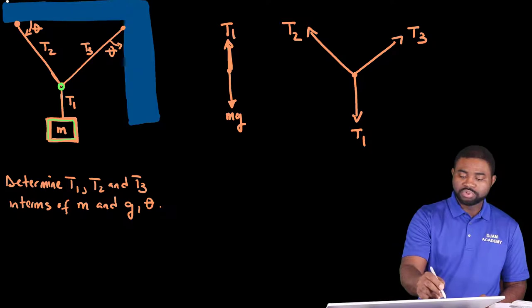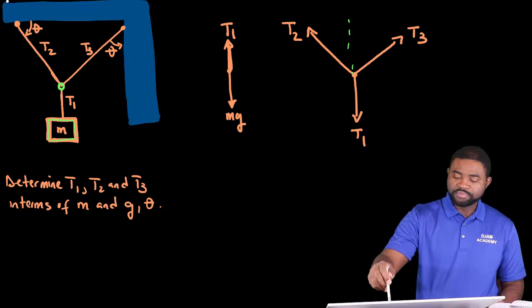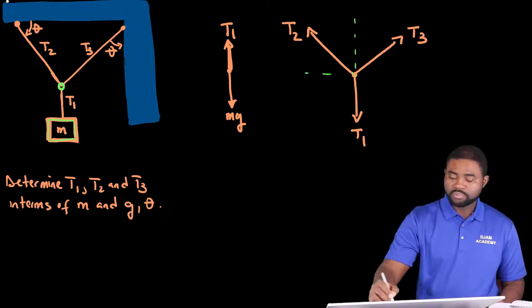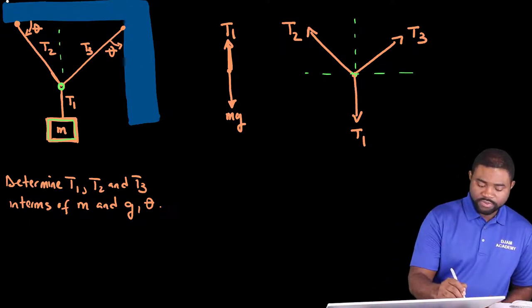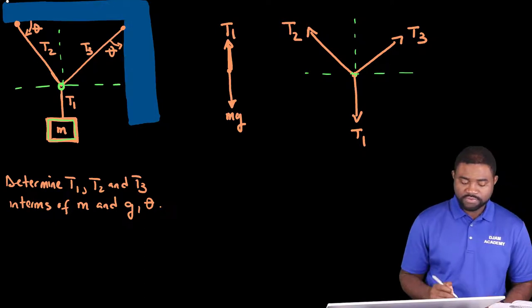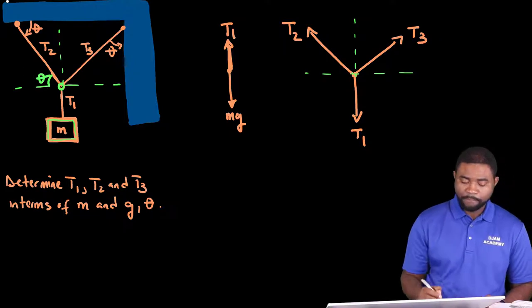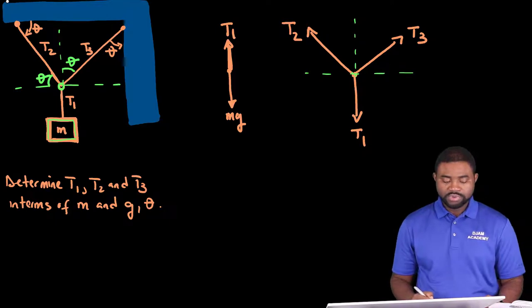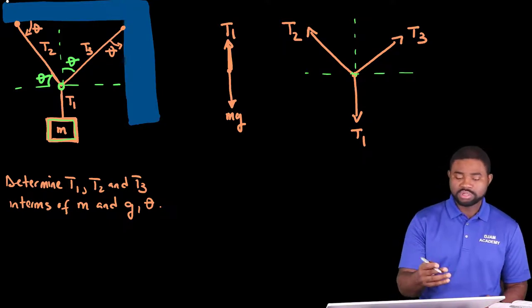I'm going to superimpose a coordinate system in the second free body diagram. Keep in mind that this is our coordinate system. This angle is theta, which means that this angle is theta. The reason is because the angles under the arms of letter Z are always equal. We call that alternate angles.